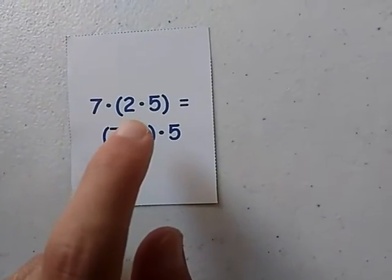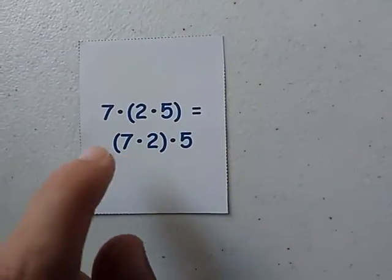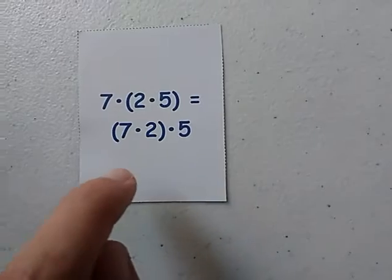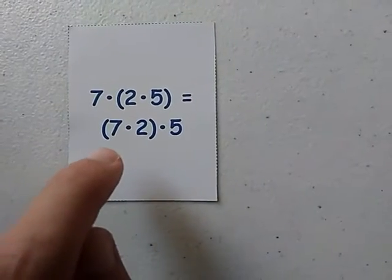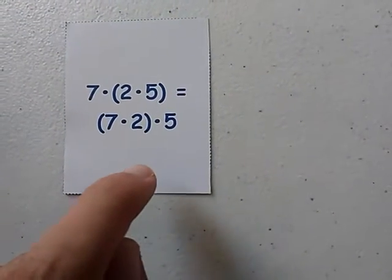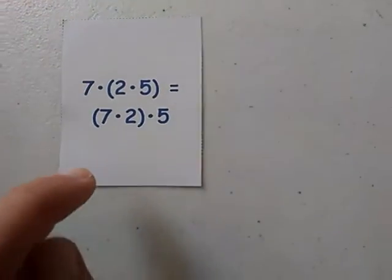2 times 5 times 7 equals 7 times 2 times 5. This is the Associative Property of Multiplication.